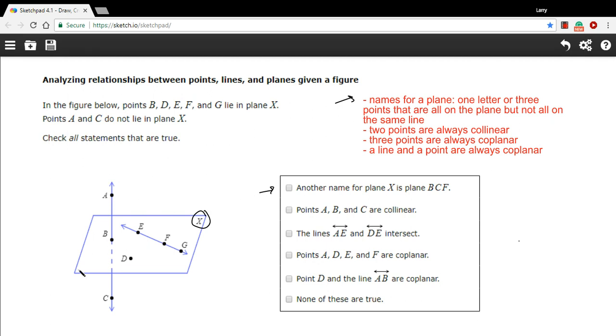Or you can choose three points from the plane. They have to all lie in the plane, but not all be on the same line. So coplanar, but not collinear points. In this case, we have B and C and F, but C doesn't lie in the plane. So this is not a good name for this plane.